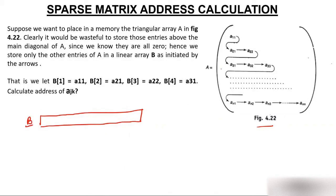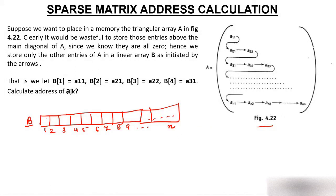Suppose B is an array where I'm storing these elements, and suppose the indexes start from 1, 2, 3, 4, 5, 6, 7, 8, 9, and so on up to n. I'm storing A(1,1) at B[1], A(2,1) at B[2], A(2,2) at B[3], A(3,1) at B[4], A(3,2) at B[5]. This is how I'm storing the elements.